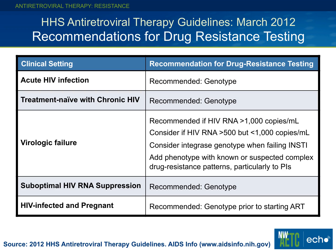The third indication is individuals who have virologic failure — that's by far the most common time when we do resistance testing. It's recommended to do resistance testing if the viral load is above 1,000 in the setting of virologic failure, and to consider it if it's above 500 but between 500 and 1,000. It is also recommended to consider integrase genotyping when a person is failing an integrase strand transfer inhibitor, and to consider adding a phenotype when you have suspected complex drug resistance patterns, particularly in patients who have been on long-term protease inhibitors.